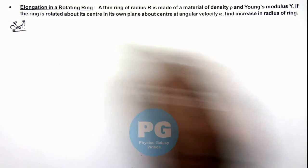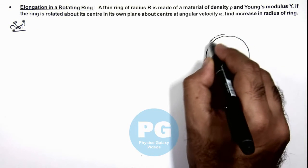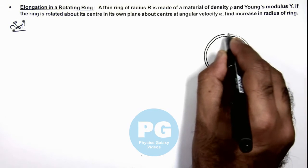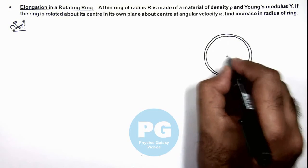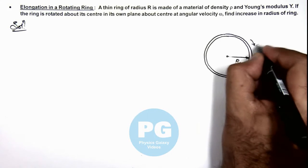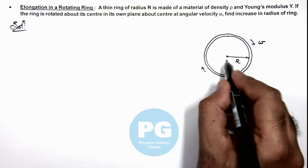Here if we draw the picture of ring, this is the ring given to us. It is of radius R, and we are rotating the ring at angular speed ω about its own center O.